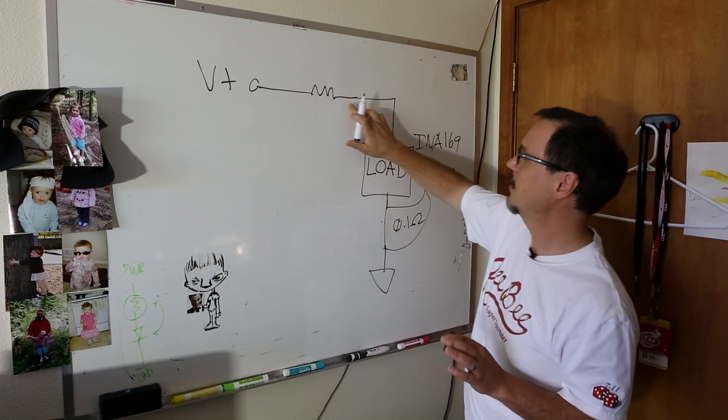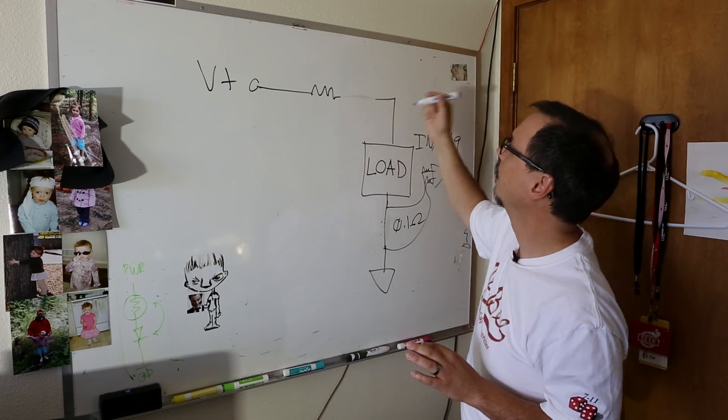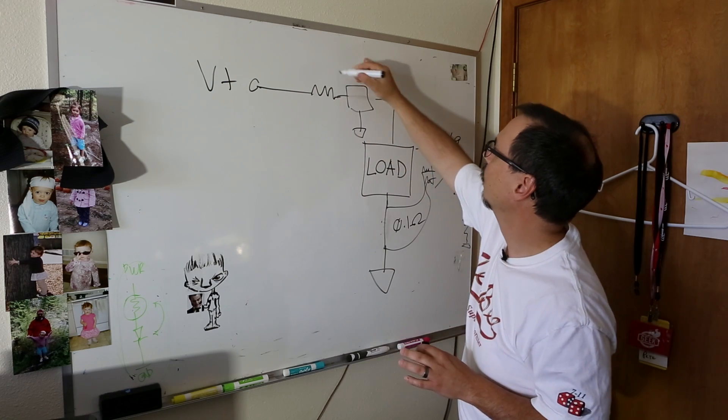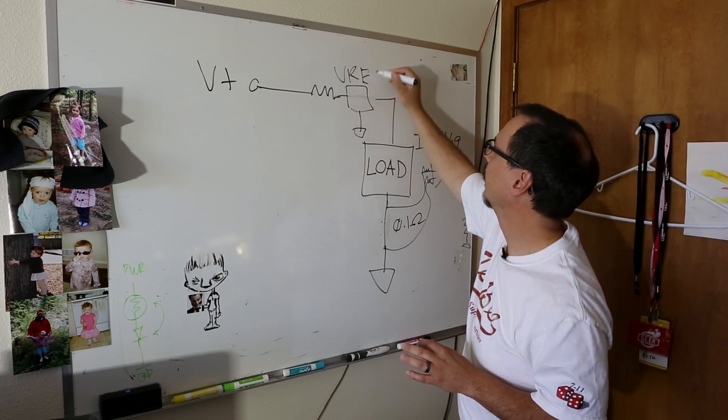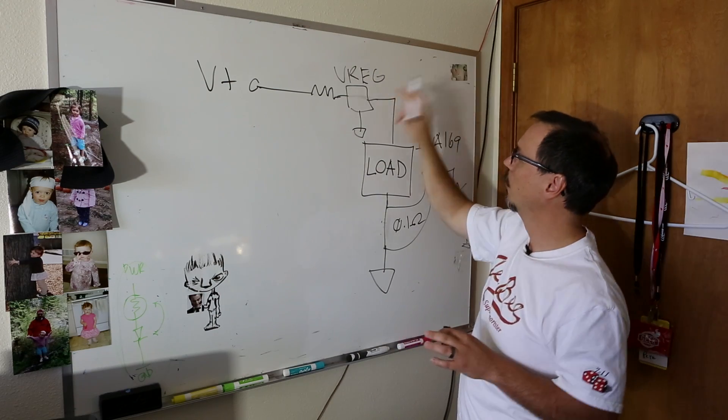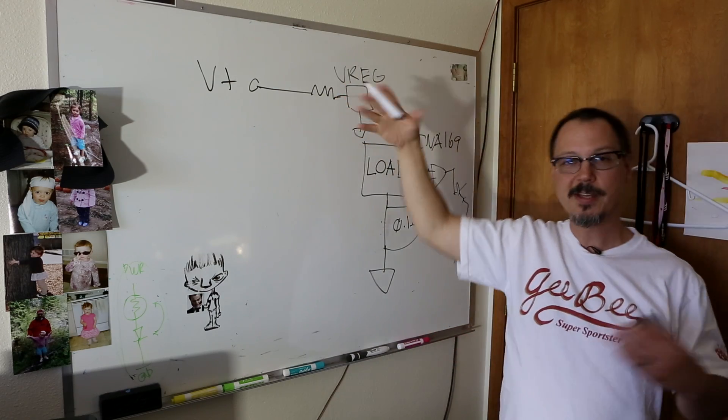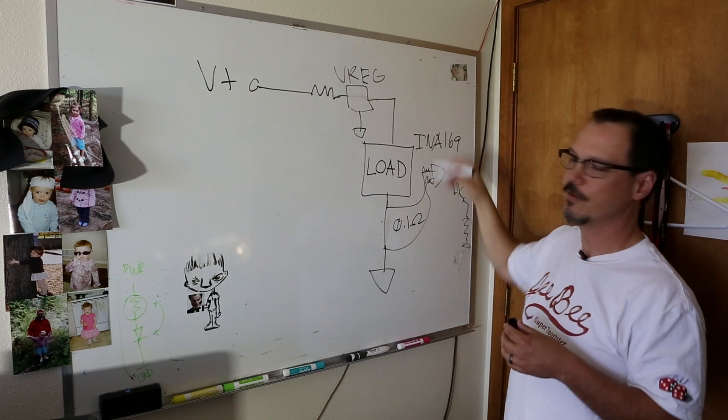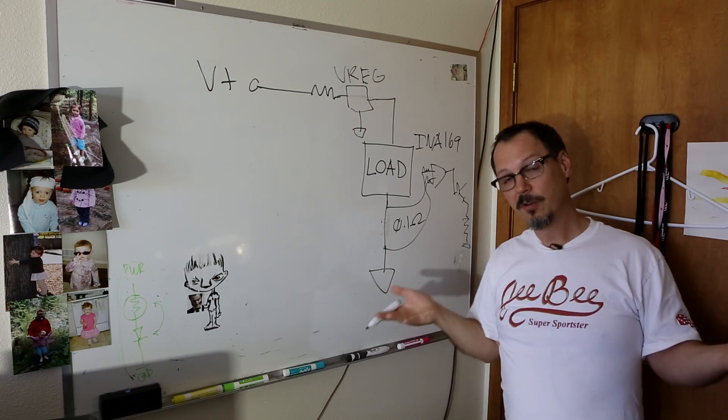But since it's a high side sensor, what you can do is you can put it before your V-reg, your voltage regulator. Voltage regulator is designed to take that noise out. And so you can still sense what's going on in your circuit without actually introducing a whole bunch of noise. Pretty cool, huh?